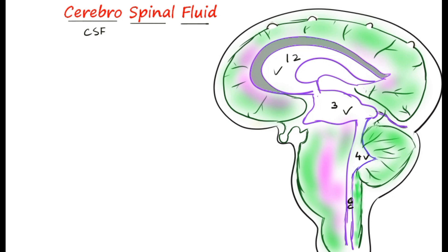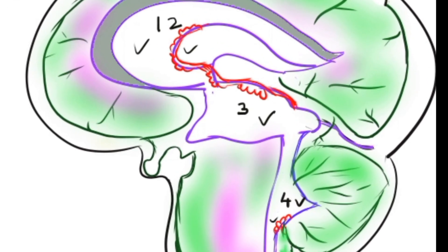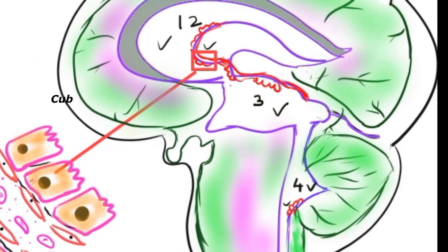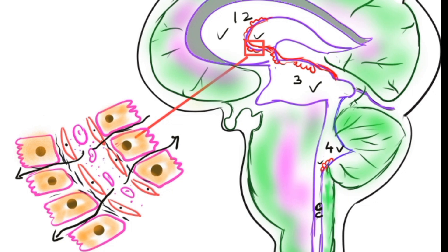These cavities are usually filled with CSF, cerebrospinal fluid, which is formed by the choroid plexus of the ventricles. We have choroid plexus mainly in the lateral ventricle as well as just below the fourth ventricle. These choroid plexus are very specialized cuboidal cells surrounding blood vessels where the fluid is filtered.